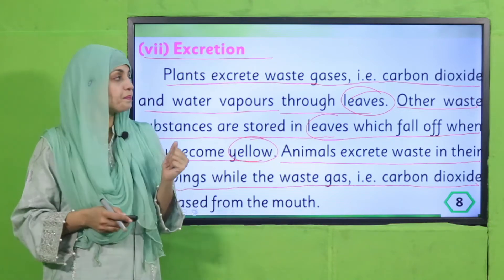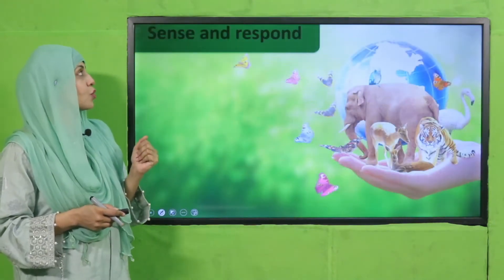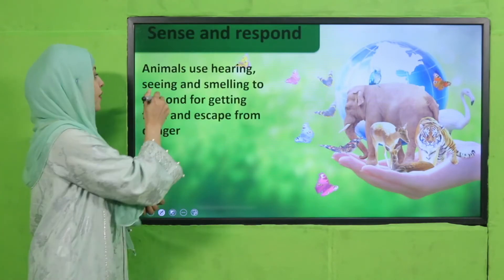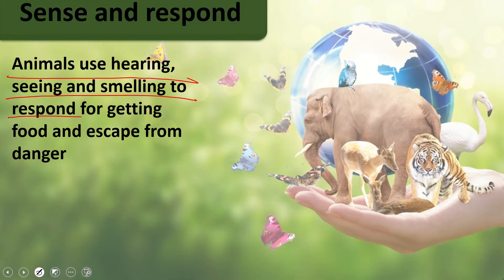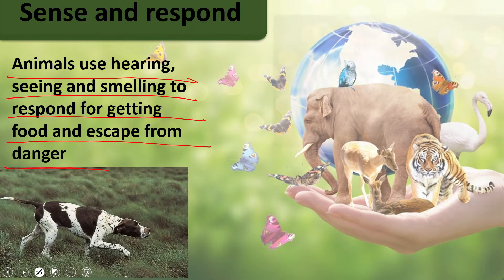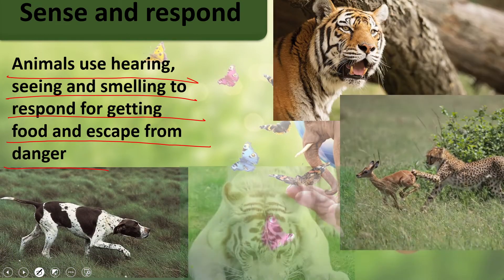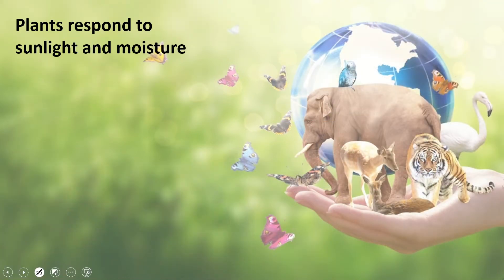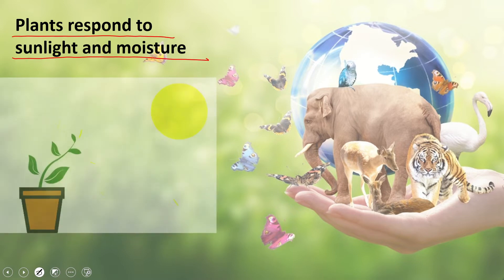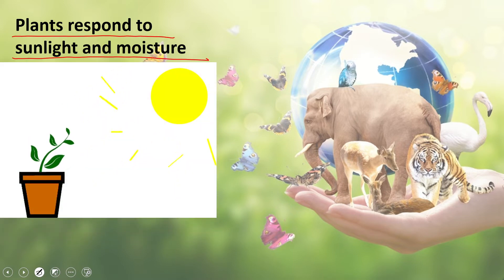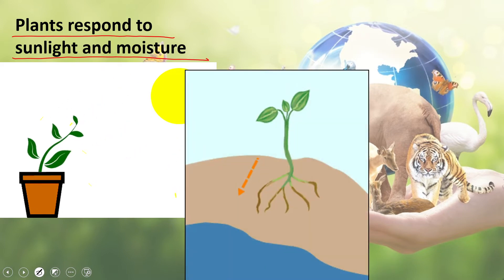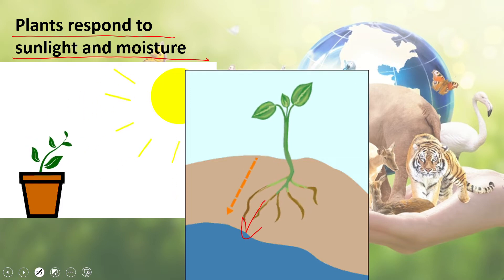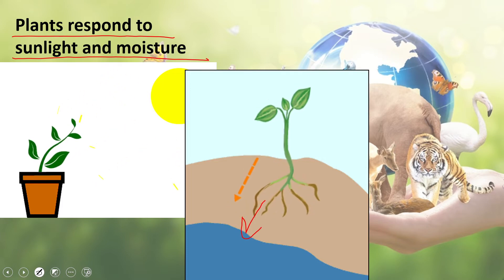Summary: animals use hearing, seeing, and smelling to respond — for getting food and escaping from danger. You can see different animals responding to their environment. Plants also respond to their environment: plants respond to sunlight and moisture. The stem and leaves grow towards sunlight, whereas the roots grow away from sunlight towards water. This is how plants sense and respond to their surroundings.